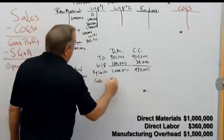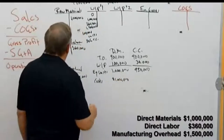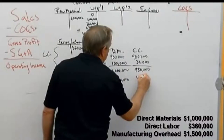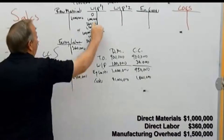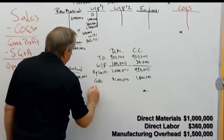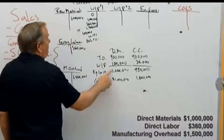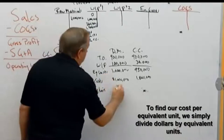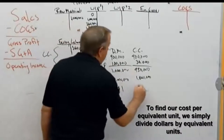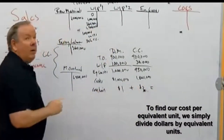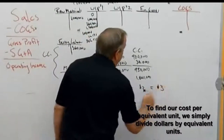Now let's look at the dollars. We spent $1,000,000 on materials and $1,860,000 on conversion costs ($360,000 labor plus $1,500,000 overhead). Cost per unit: $1,000,000 divided by 1,000,000 equivalent units equals $1 per unit for materials. $1,860,000 divided by 930,000 equivalent units equals $2 per unit for conversion costs. Total cost per unit this month: $1 plus $2 equals $3.